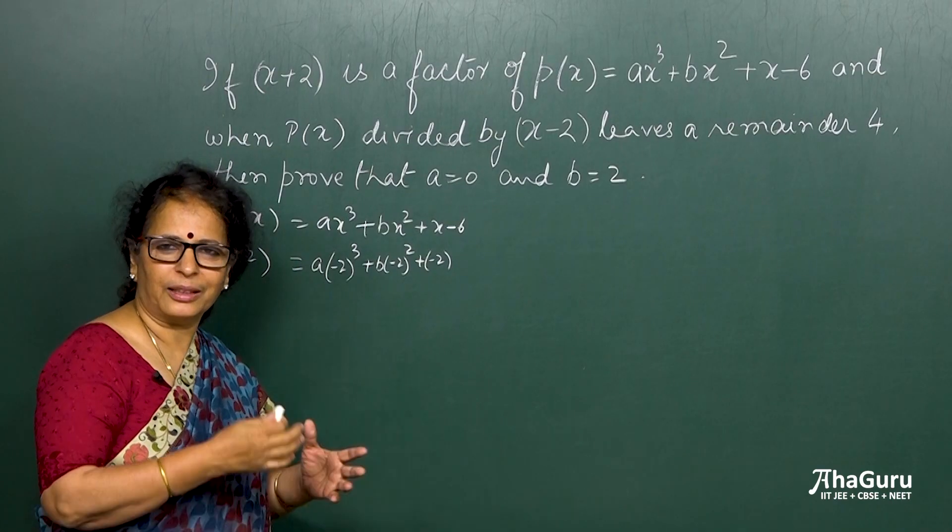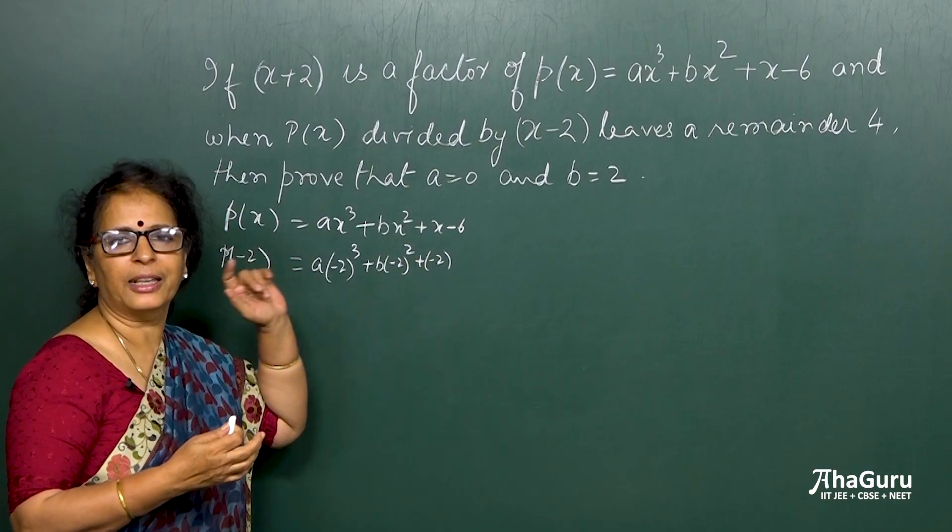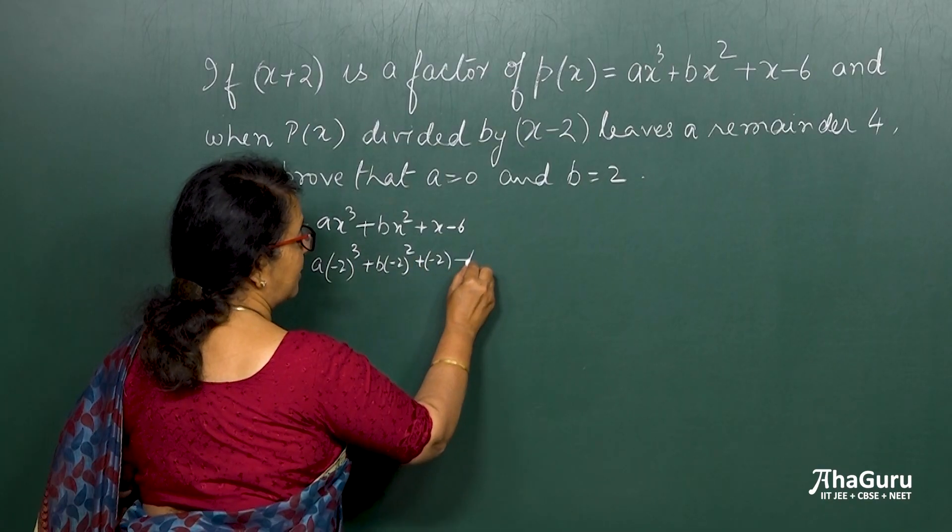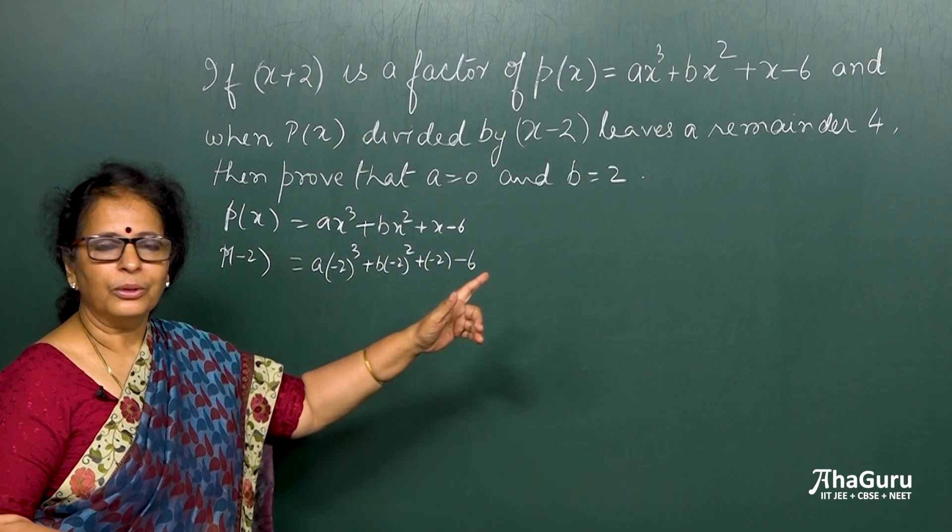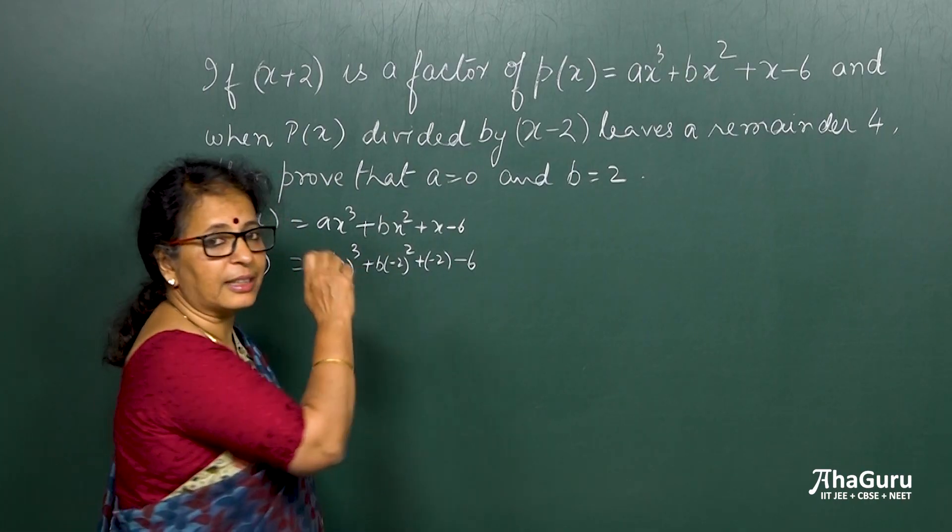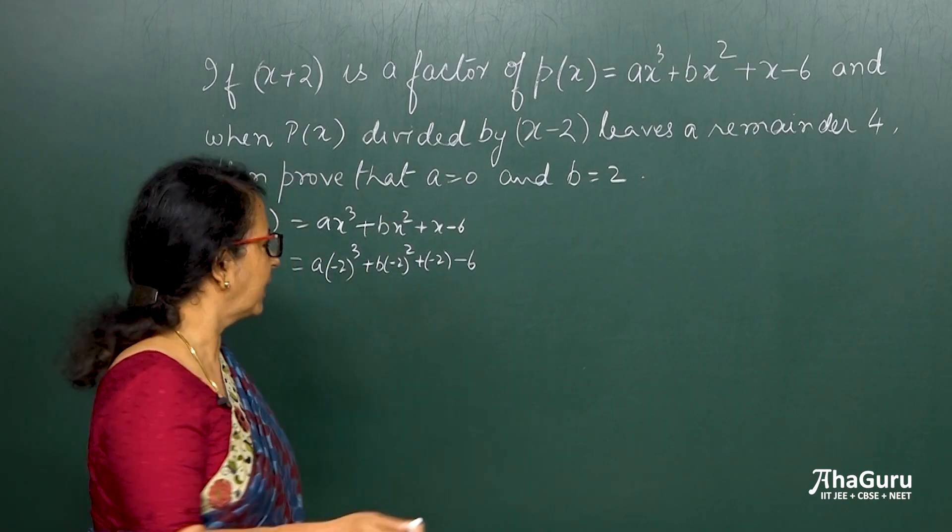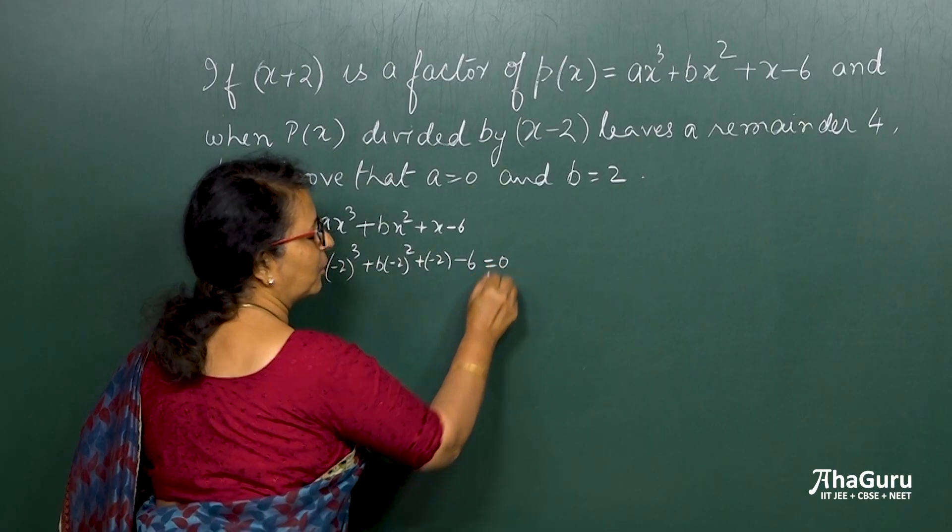We are very confident, it's fine. But otherwise, these are the small things where we end up making mistakes. Minus 6. Now what should I equate that to? Since this is a factor, this entire thing when I substitute, the remainder is 0. So I can as well put this as equal to 0.